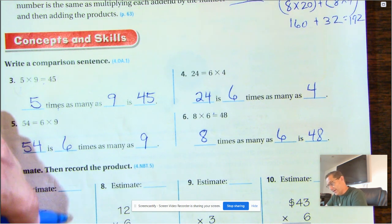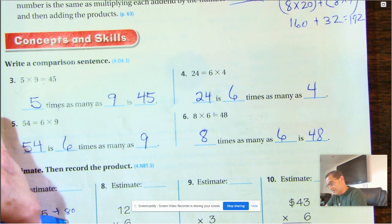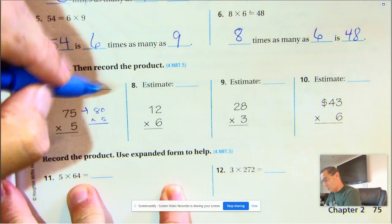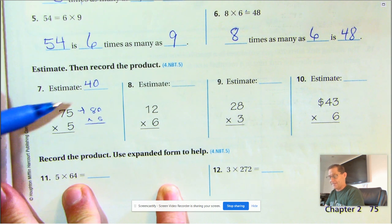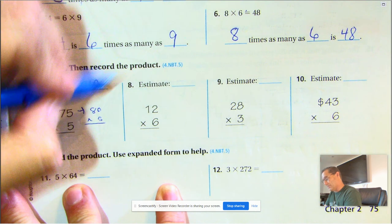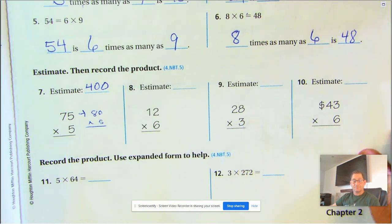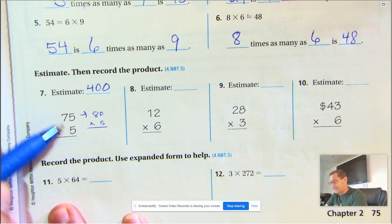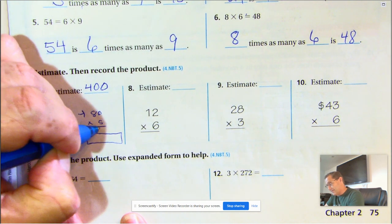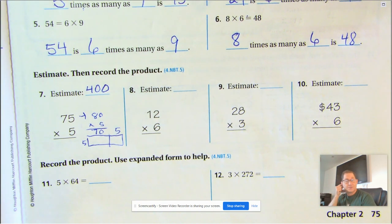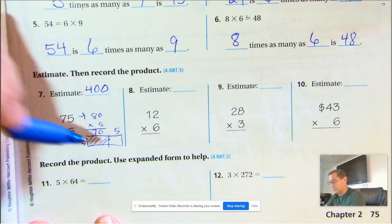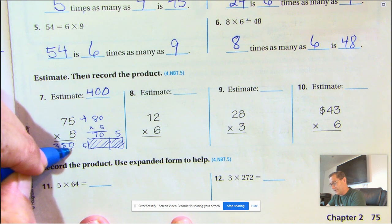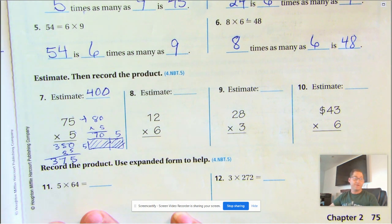Number seven, estimate and then record the product. So 75 is close to 80. So 80 times 5. So we've been practicing multiplying the basic math fact. So 8 times 5 is 40. And then we've been placing the zero from the tens, the hundreds. So counting how many zeros are in the number that we multiply by. And so there's 1, 0 in 80. So I'm expecting an answer that's close to 400. Alright, so the first one we're going to do is 5 times the tens. Remember we broke up the 75. That's 70 and 5. And we're multiplying each of those by 5. So 5 times 70, multiply the tens first. We get 350. Multiply the ones, 5 times 5, 25. Add those together, we get 375.